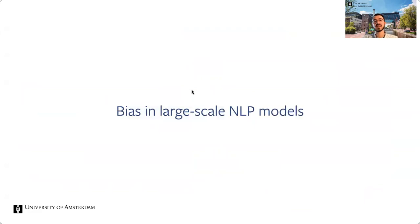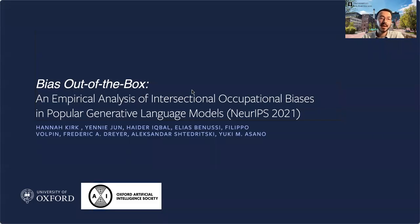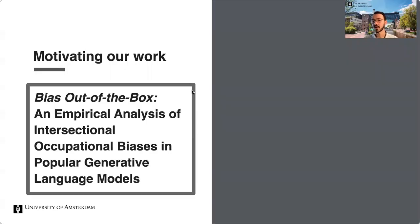Next we're going to talk about analyzing bias in NLP. Why does a computer vision researcher work on this? Two reasons: I had the opportunity to work with a bright and open-minded interdisciplinary team, and I believe thinking about bias from a quantitative perspective is very important if we want to arrive at actual solutions. The paper is called Bias Out-of-the-Box: An Empirical Analysis of Intersectional Occupational Biases in Popular Generative Language Models, presented at NeurIPS 2021.